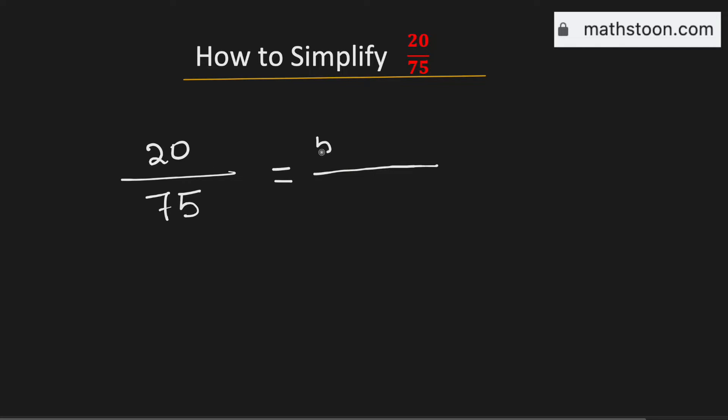We know that 20 can be written as 5 times 4, and 75 can be written as 5 times 15. As 5 is present in both the numerator and the denominator, we can cancel it out. Therefore, this is now equal to 4 over 15.